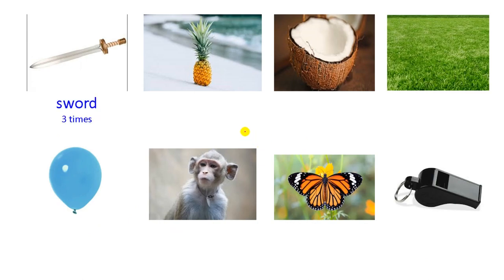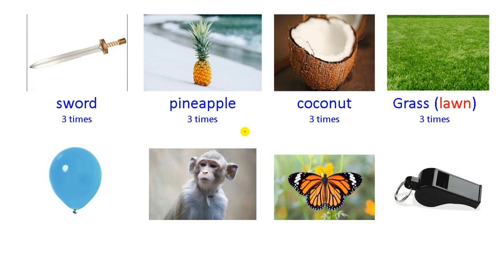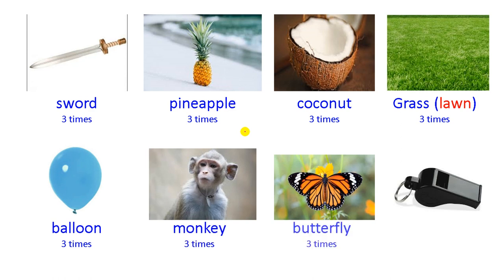Sword, pineapple, coconut, grass or lawn — we can say lawn in American English accent, lawn. Monkey, butterfly, and weasel.